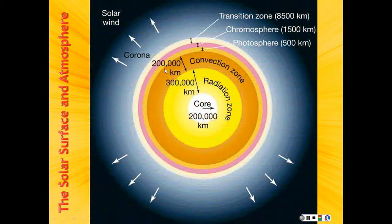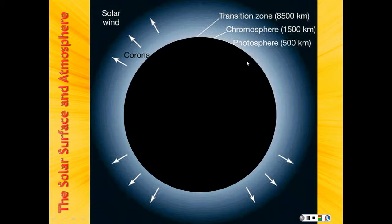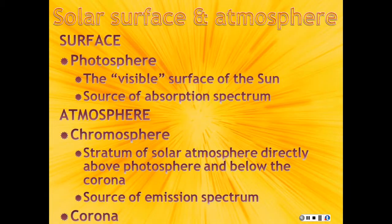So we want to spend a little bit of time looking at the surface. Here again, we've got the core, the radiation zone, the convection zone. And then you've got the surface called the photosphere. Outside of that, you have the atmosphere. So the photosphere is considered to be the visible surface and it is the source of an absorption spectrum. You remember we did Kirchhoff's laws, there is an absorption spectrum that comes from the photosphere, whereas the atmosphere actually gives rise to an emission spectrum.